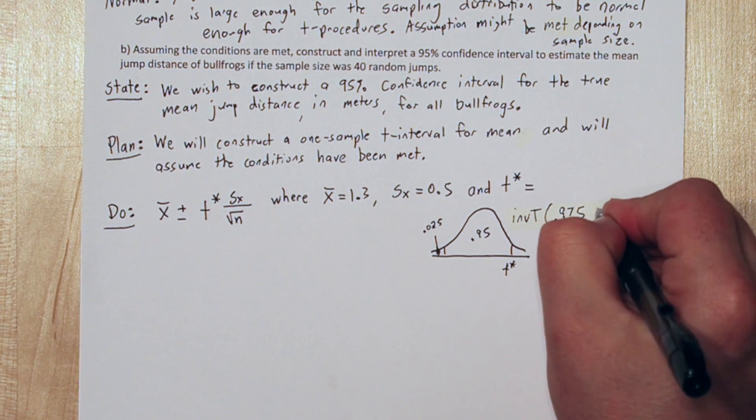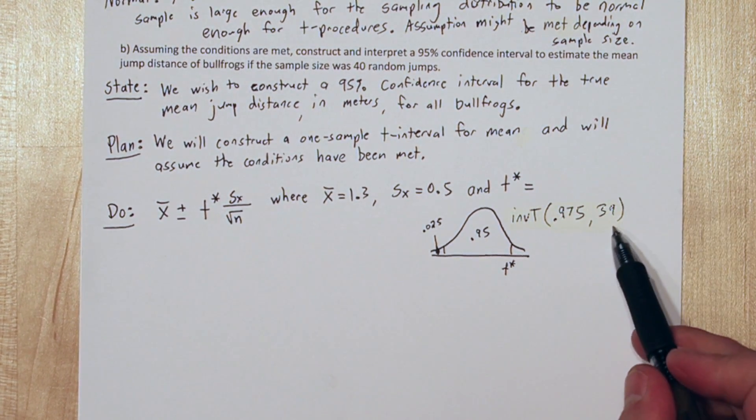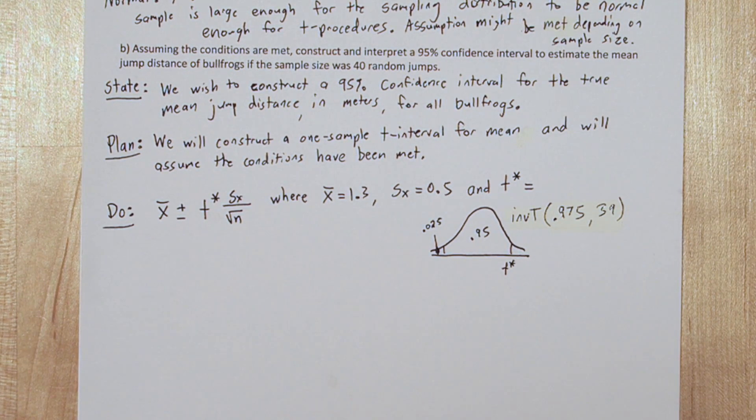We also have to say 39 degrees of freedom, that's our sample size of 40 jumps minus 1. So here's how to use inverse T on the calculator.